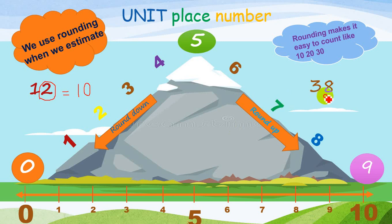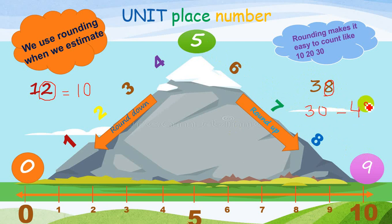The next number is 38. What is present on its units place? 8. Numbers 5, 6, 7, 8, and 9 — you are going to round up. 38 is present between 30 and 40. Round up means I'm going to use the bigger multiple, which is 40. So I'm going to change the number 38 to 40.